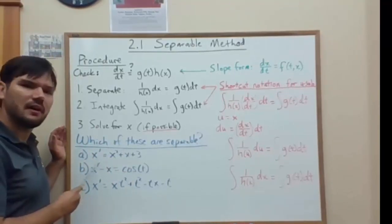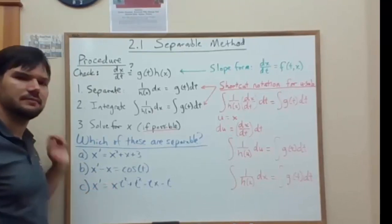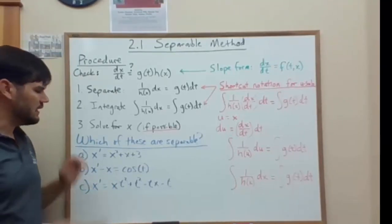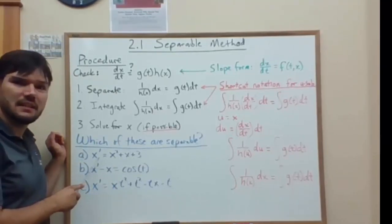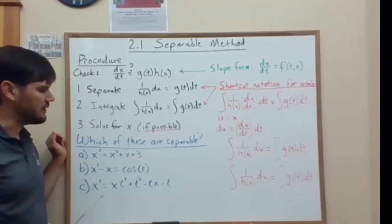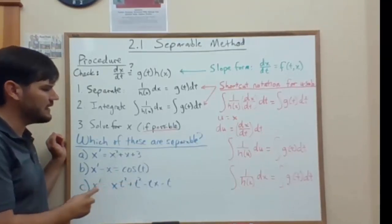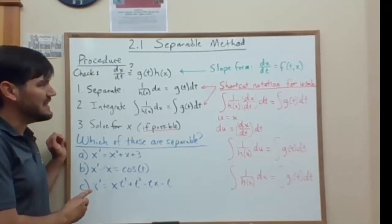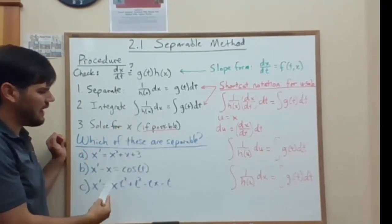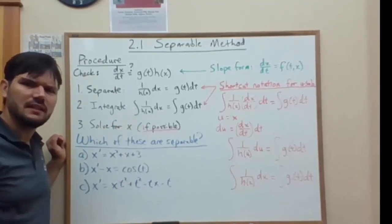First, we have x prime equals x squared plus x plus 3. So first off, x prime is the same thing as dx dt, so we got the slope form already written out. You want to write the right-hand side of the slope as a function of t times a function of x. Now I don't see a function of t here,